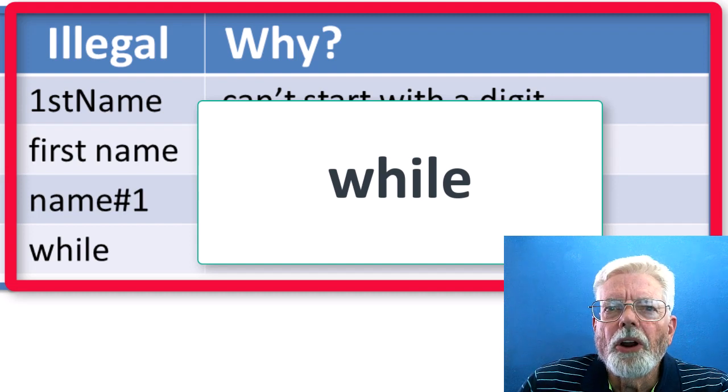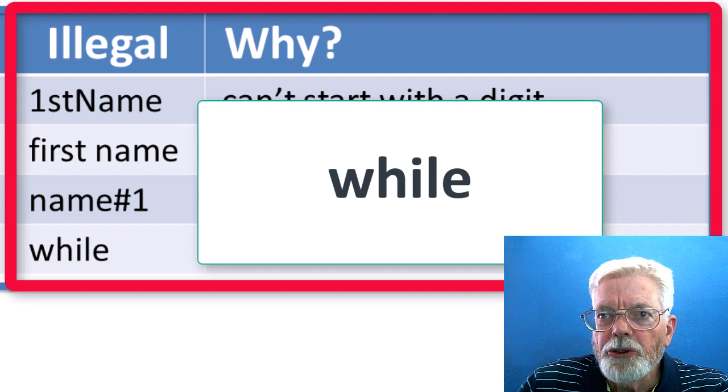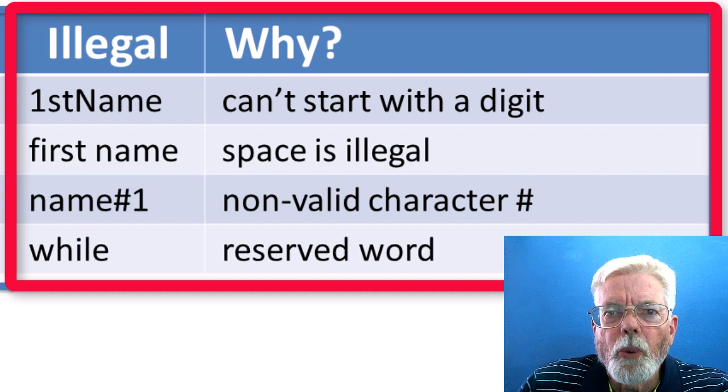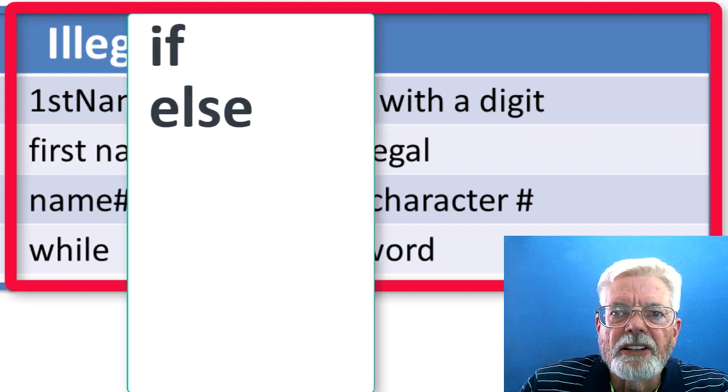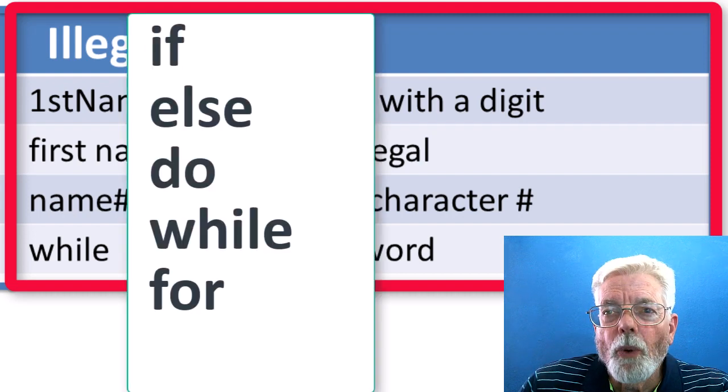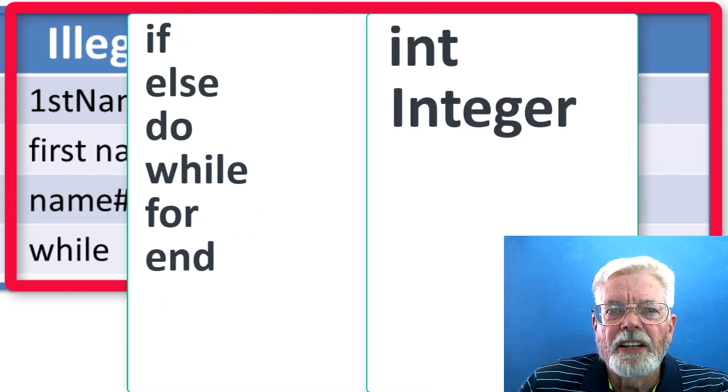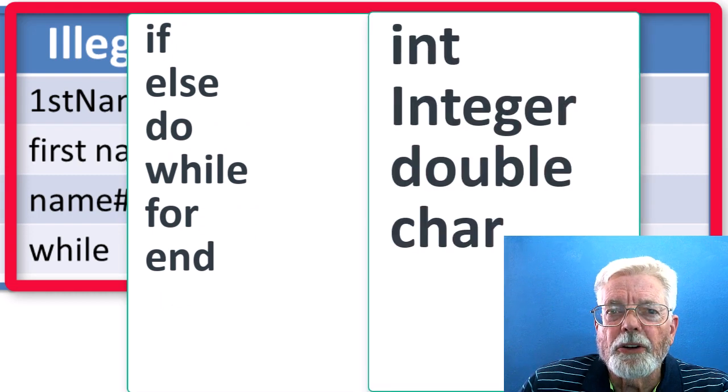Although not all programming languages use the exact same set of reserved words, some of the most common are control words such as if, else, do, while, for, end, and data types such as int, integer, double, character, string.